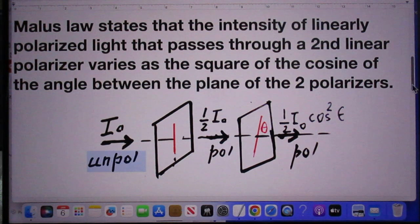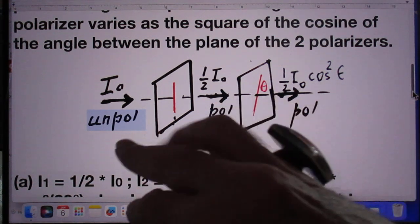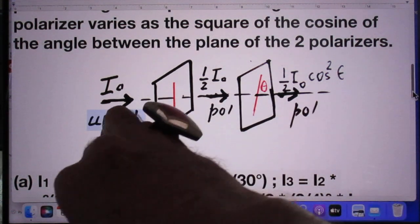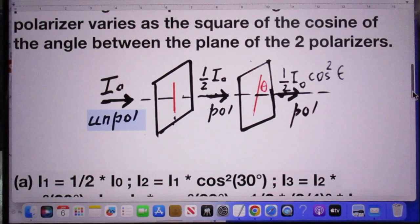So here is Walter Lewin's sketch, which is not part of Eugen's solution. You see here intensity I₀, unpolarized light coming in.